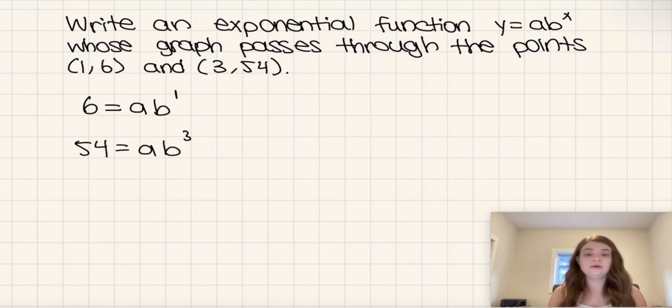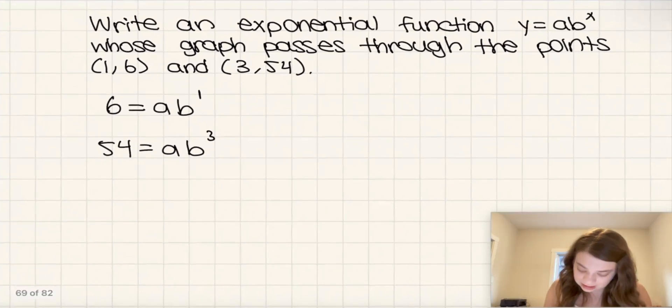Now what we need to do is we need to solve for a and for b. And so I'm actually going to simplify this first equation a little bit. Actually let's do the opposite. Let's divide both sides by b. That would mean a is equal to 6 over b.